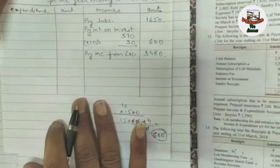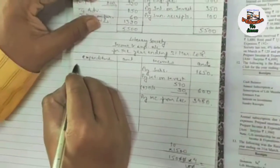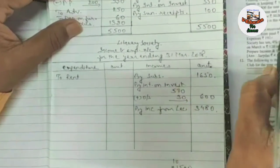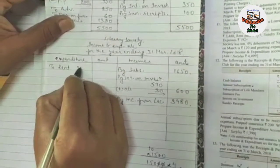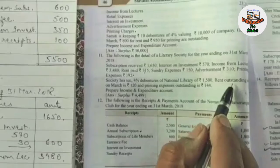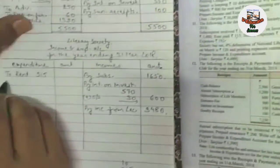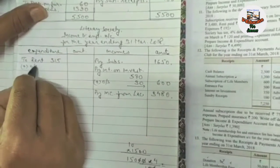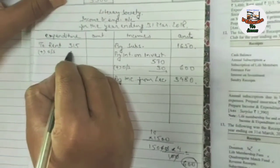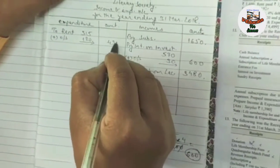Then it is given rent paid, which will come on the expenditure side. The amount given is ₹315. At the last it is written that rent outstanding is ₹120. You have to add the outstanding amount because it belongs to the current year. 315 + 120 = ₹435 total rent.